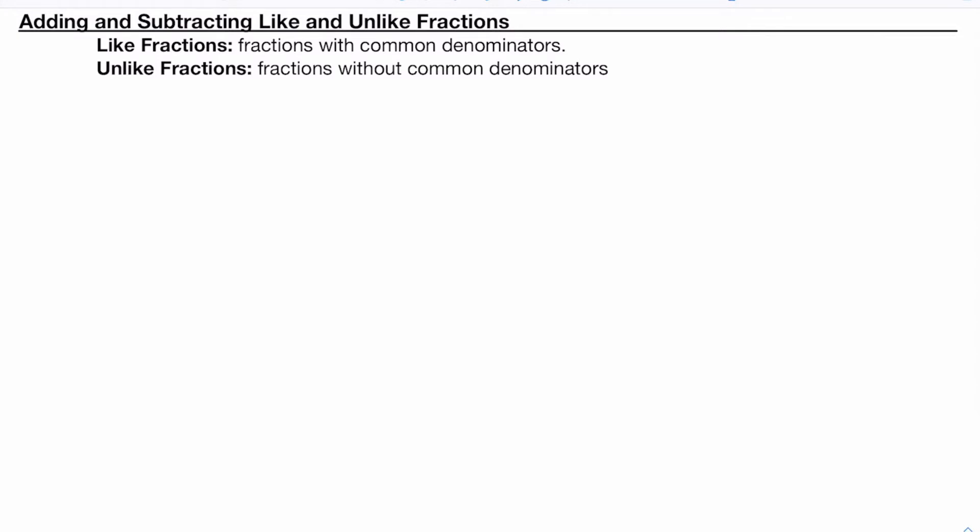Like fractions, we can see the definition right here, are fractions with common denominators. For example, if I had something like one-third and two-thirds, those have common denominators. Three is the denominator and it's the same. Unlike fractions are fractions without common denominators, like one-third and three-fifths. They have different denominators.